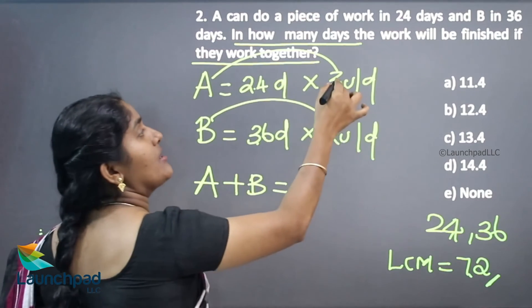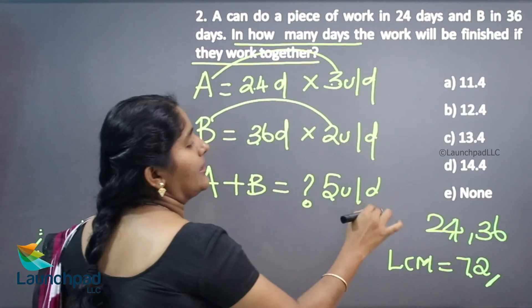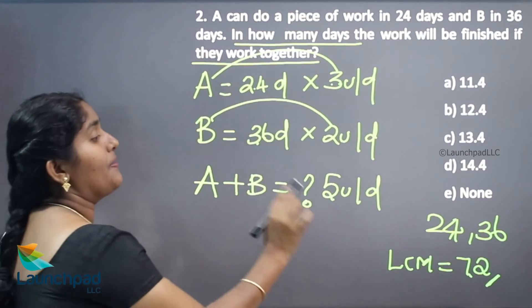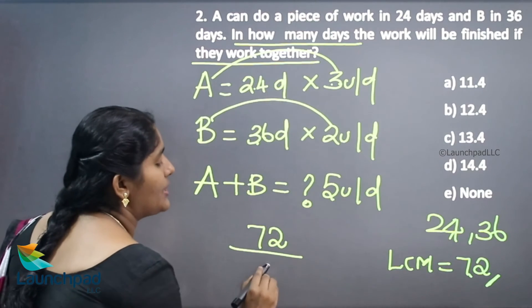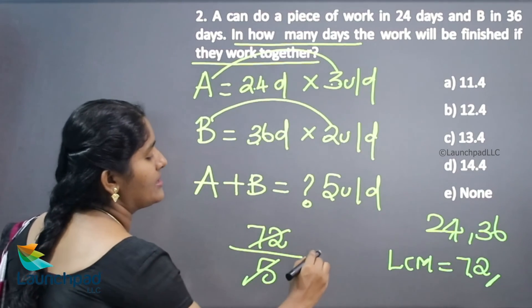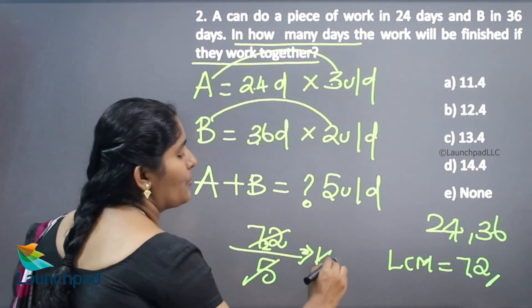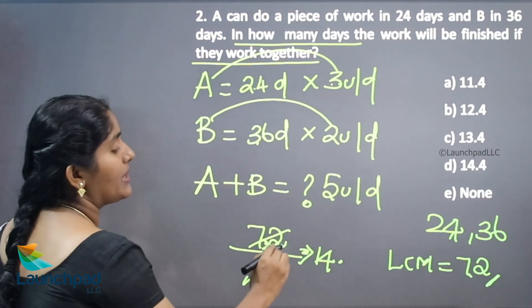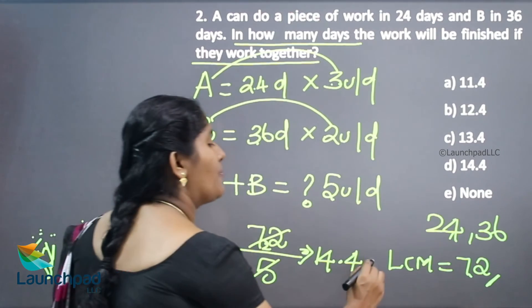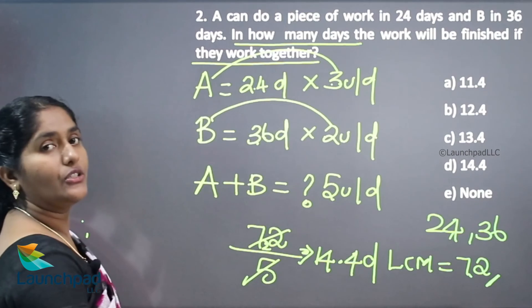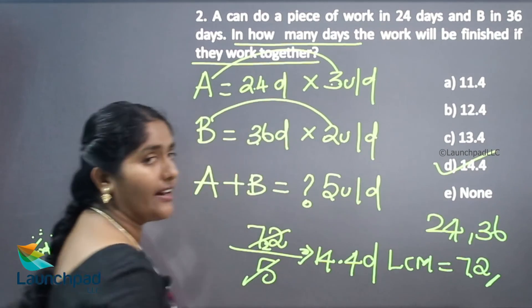If both can join together, 3 plus 2 is 5—5 units per day. Now, totally 72 units. 72 divided by 5: 1 times 5 is 5, remainder 2; 4 times 5 is 20, remainder 2; 4 times 5 is 20—14.4 days they take to complete the whole work. Option D is the correct answer.